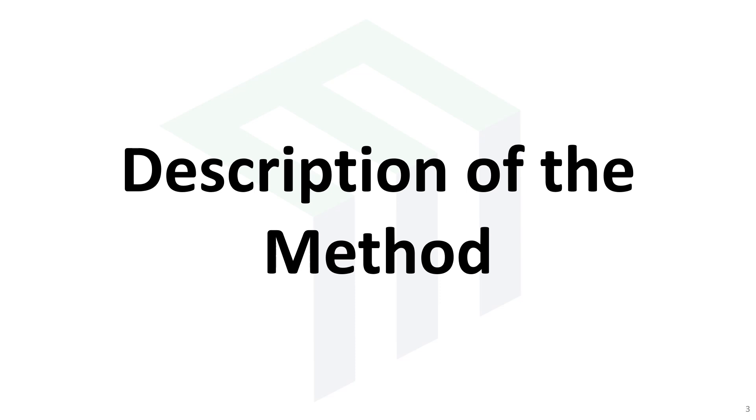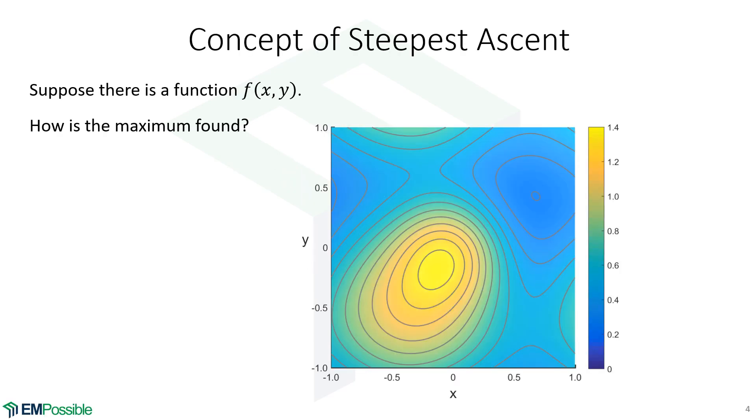Description of the method. So we're starting off with a function, and I've drawn the function and its isocontours. How do we find the maximum? Well, let's start with a point x1.